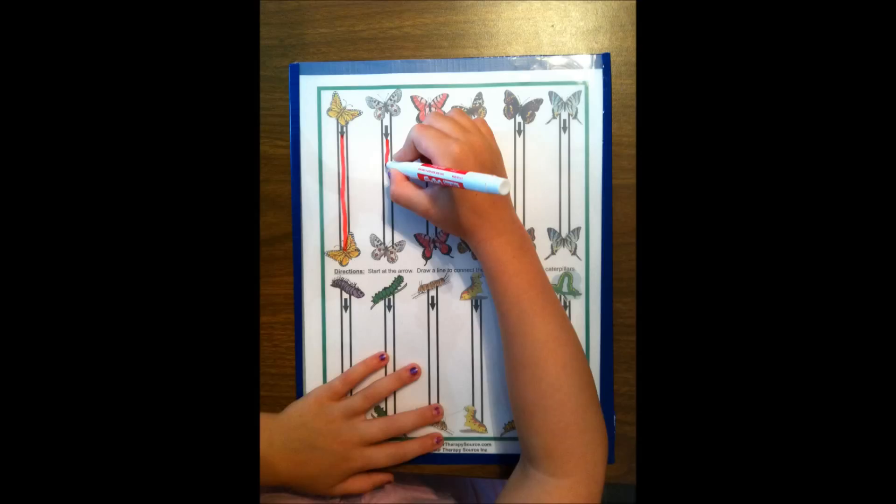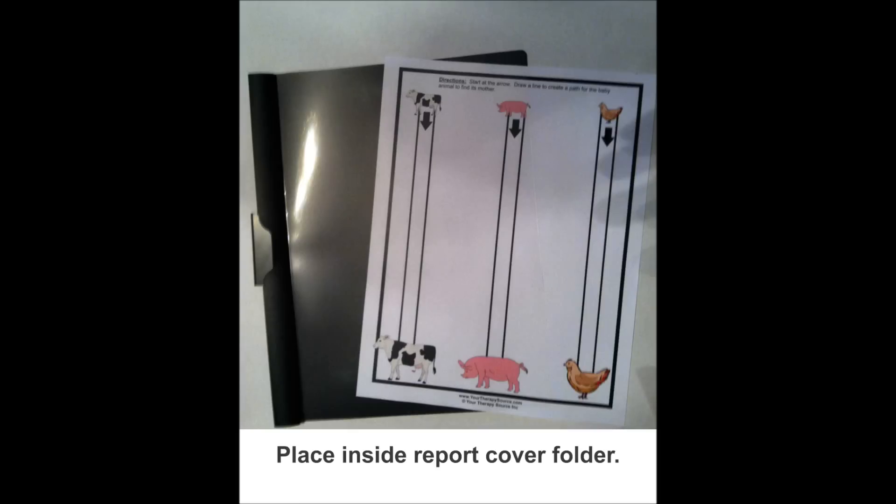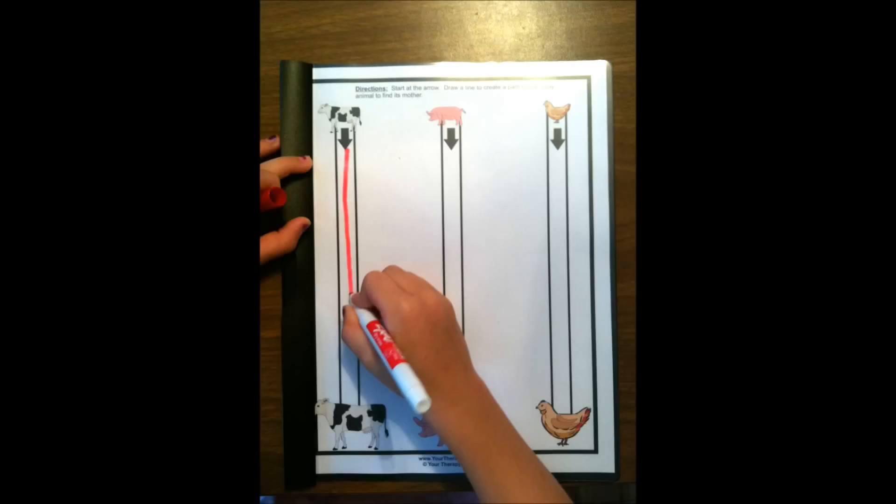Another option is to slip a page inside a regular report cover. Once it's inside, you can use a wipe off marker on the outside and then simply change the page to move on to the next worksheet.